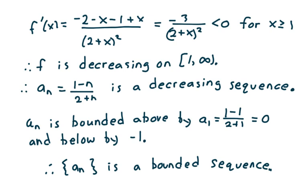That derivative is less than 0 for x greater than or equal to 1. So f is decreasing on the interval [1, infinity). Therefore we can conclude that a sub n, which equals (1 minus n) over (2 plus n), is a decreasing sequence.